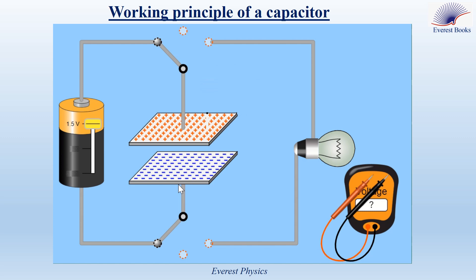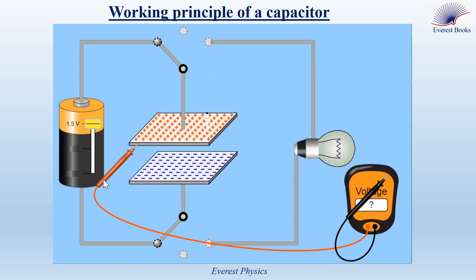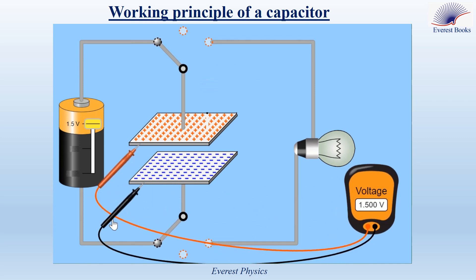Electric equilibrium is attained when there is no transfer of electrons between the battery and the capacitor. Since we have an accumulation of charges on the two plates, a potential difference is created between them. Let's measure this potential difference using the voltmeter. We observe that the voltmeter measures a voltage of 1.5 volts, equal to that of the battery.